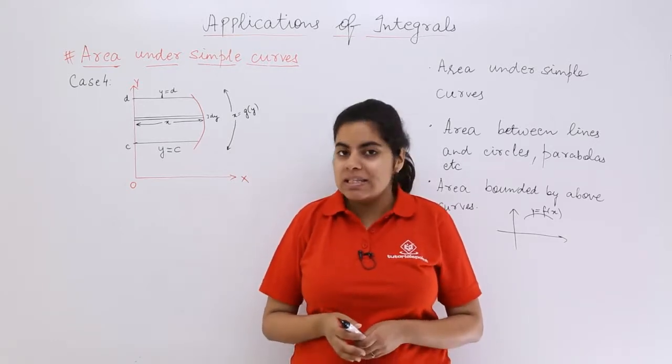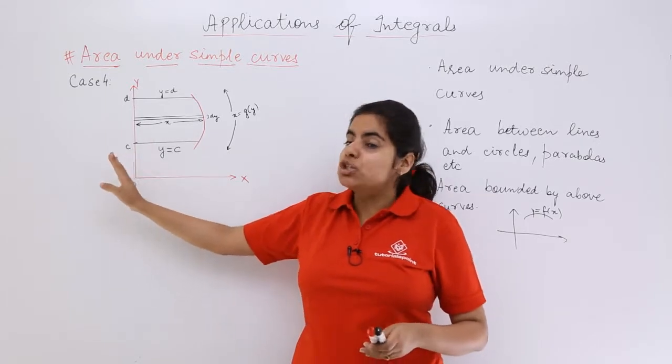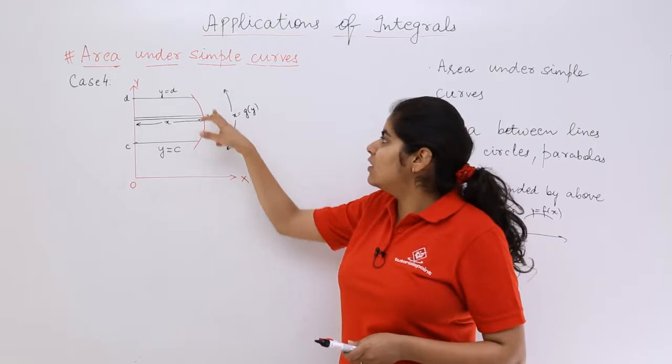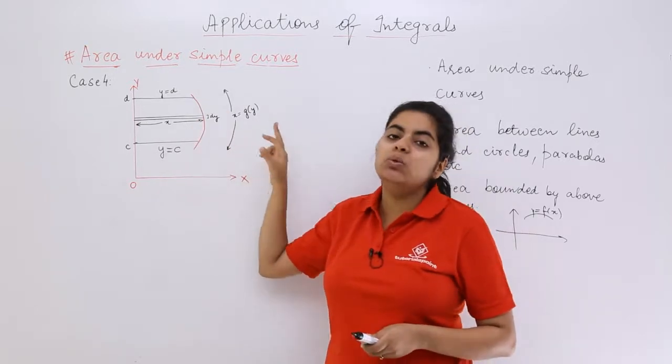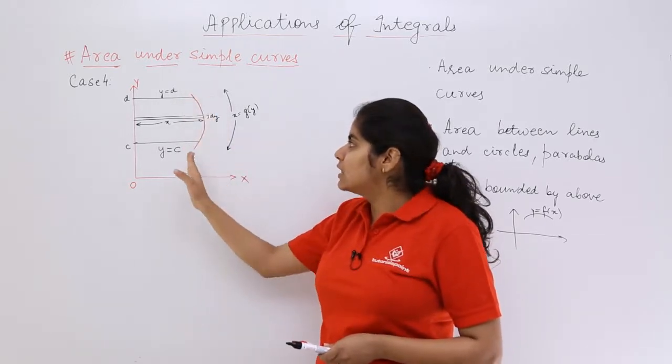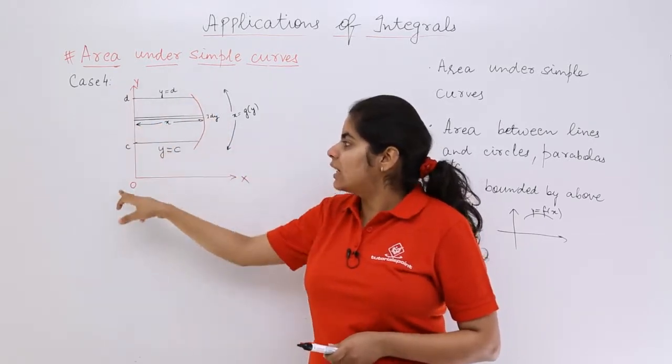This time we'll be talking about a curve which is towards the right-hand side of the y-axis, and the curve's name is x equals g of y, because it is to the right-hand side of the y-axis.